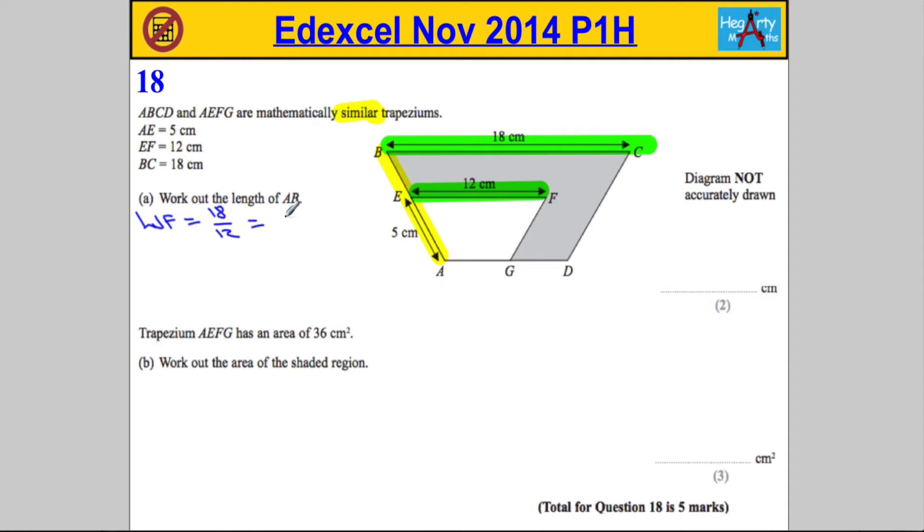18 over 12 is going to be the same as 3 over 2, which is 1.5. So to go from the small side to the big, I would times by 1.5.